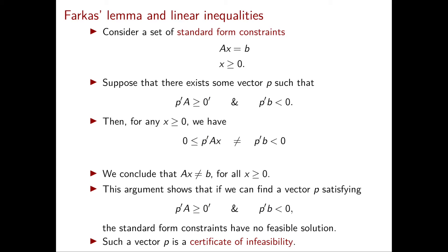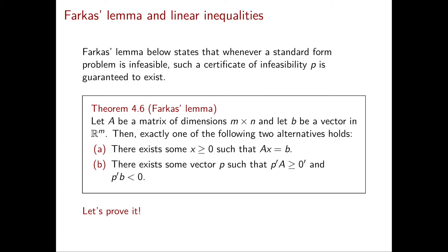So this vector p is a certificate of infeasibility. If we can find such a vector p satisfying these conditions, then we do have a certificate of infeasibility. However, it's unclear at this point if such a certificate always exists for any system Ax = b, x ≥ 0 that is infeasible. Farkas Lemma says that such a certificate of infeasibility p is always guaranteed to exist whenever the standard form problem is infeasible — no matter what system you start from. Of course, the difficulty then will be to find this vector.